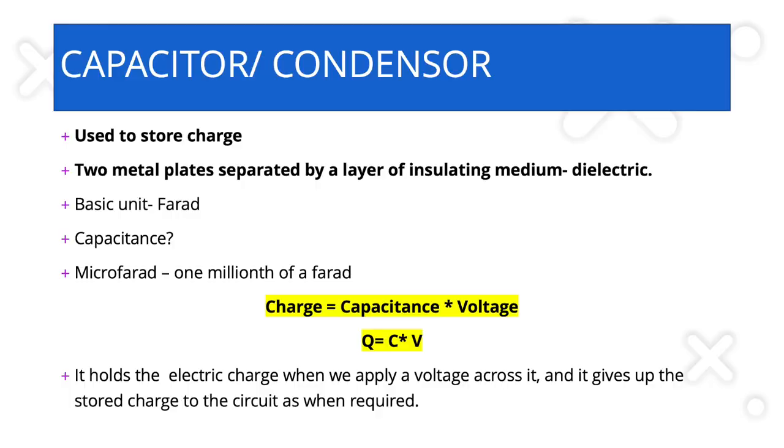The unit of capacitance is the farad. Usually we don't express it in farads but in microfarads, where one microfarad is one millionth of a farad. Capacitance is simply the property of the capacitor to store charge. The charge stored in a capacitor is given by: Q equals C times V, where Q is charge, C is capacitance, and V is voltage.